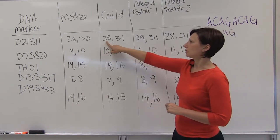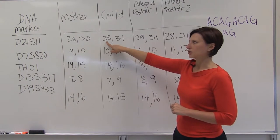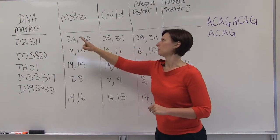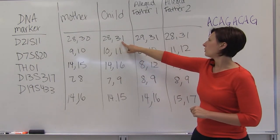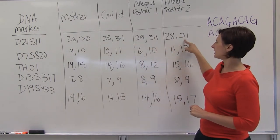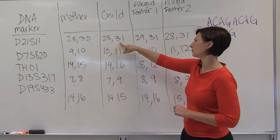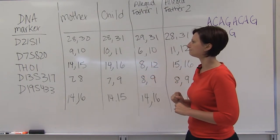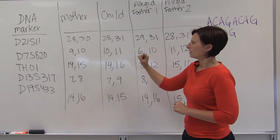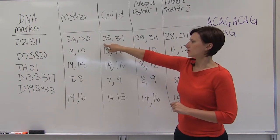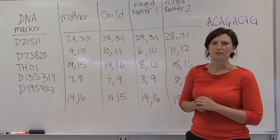So the child could only have received the 28 from its mother because it doesn't have 30. And so either one of the alleged fathers could have contributed the child's 31 repeat gene. So this first locus doesn't rule out either of the alleged fathers.